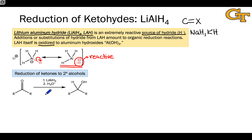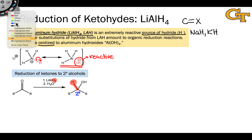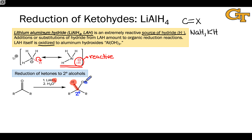When a ketone is treated with lithium aluminum hydride, the product is an alcohol — specifically a secondary alcohol, since we started with a ketone bearing two R groups. What has happened is the addition of hydrogen to the carbonyl carbon; the hydrogen that bonds to the carbonyl carbon comes from the nucleophilic hydride within LAH. At the same time, a hydrogen atom bonds to the carbonyl oxygen, and this comes from acidic workup. The two hydrogens in the resulting alcohol come from different sources.